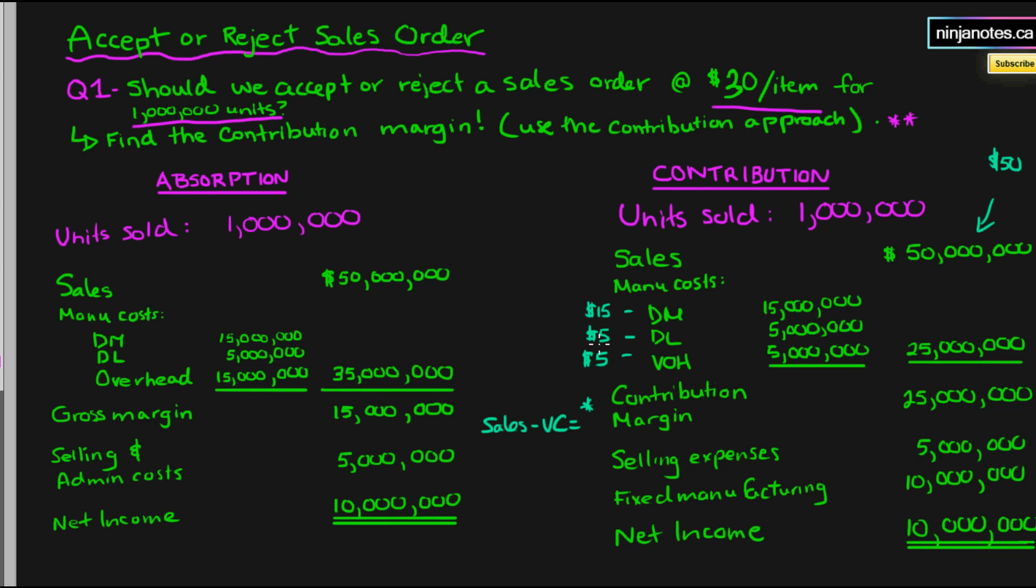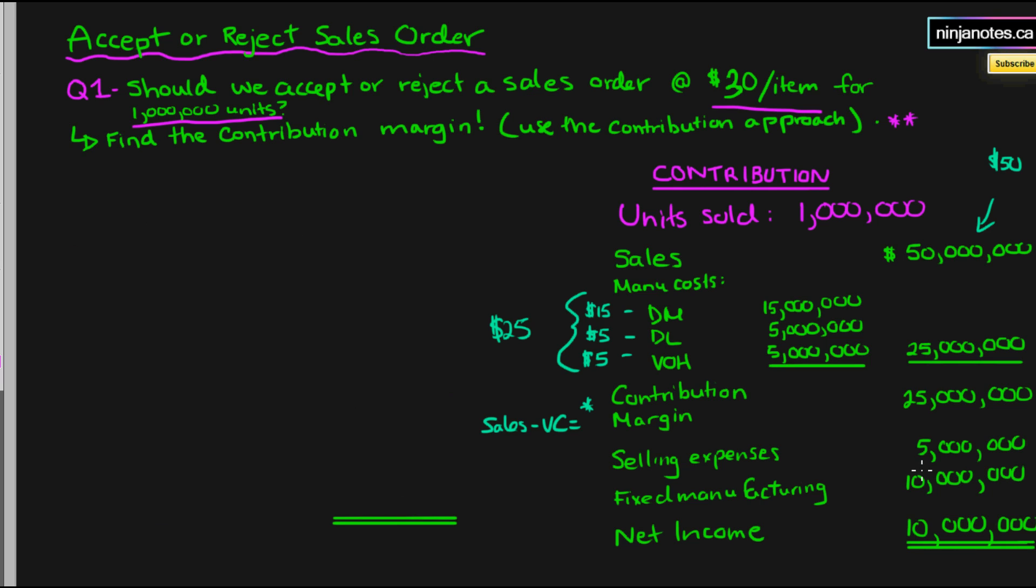Alright, so looking at this, we can tell easily that the cost is fifteen plus five plus five is twenty-five dollars a unit. And therefore, since we have thirty dollars an item of revenue coming in, we should accept the order.